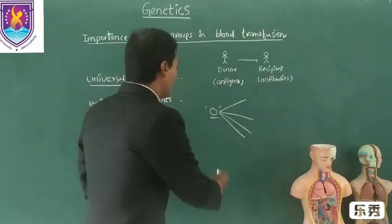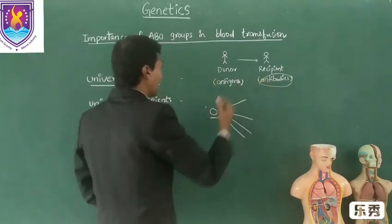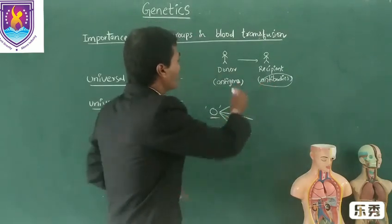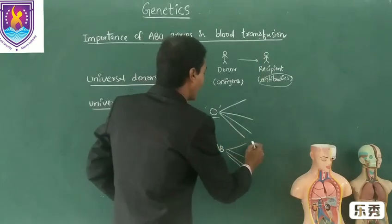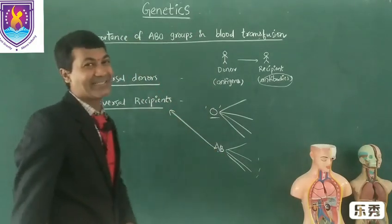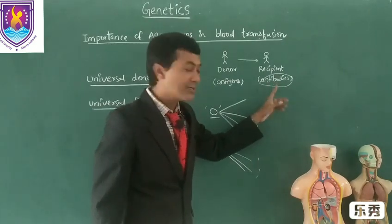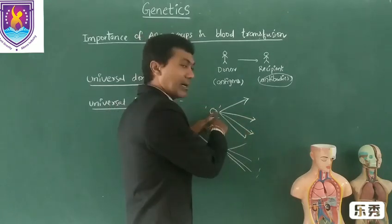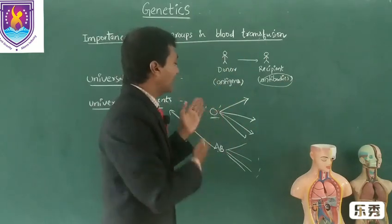In the same way, AB blood group people are not having any antibodies, so that they can receive blood from any type of donor. They can receive from any other blood group, so these are called universal recipients. AB blood group people are not having any antibodies, so they can receive blood from any other people. And blood group O people are not having antigens which cause agglutination in a recipient's blood, so they can give to anyone.